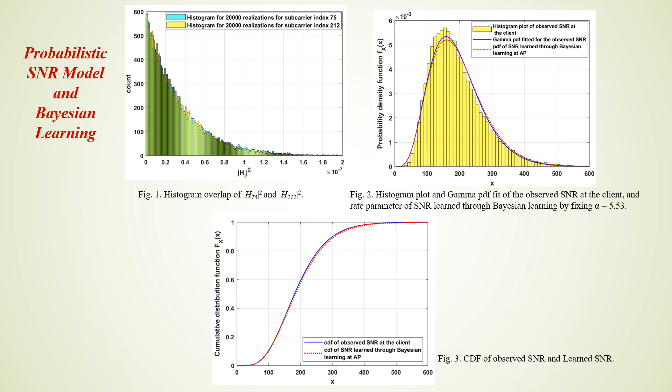Fixing the shape parameter alpha and learning the rate parameter R through Bayesian learning resulted in an excellent match with the experimentally observed receiver SNR histogram and its gamma-fitted PDF. In this figure, the blue curve is the gamma-fitted PDF for the observed SNR at the receiver, and the red curve is the PDF of the SNR learned through Bayesian learning at the access point. Figure 3 shows the CDF of the observed SNR at the client and the CDF of the learned SNR through Bayesian learning at the end of the model generation phase.